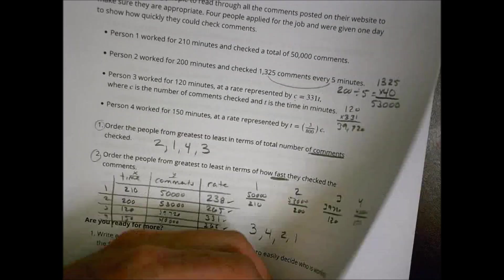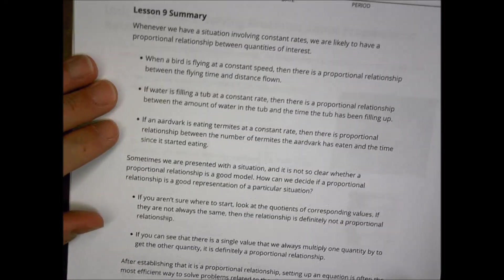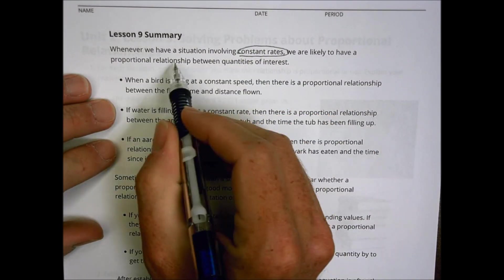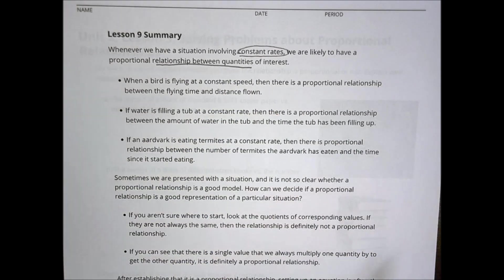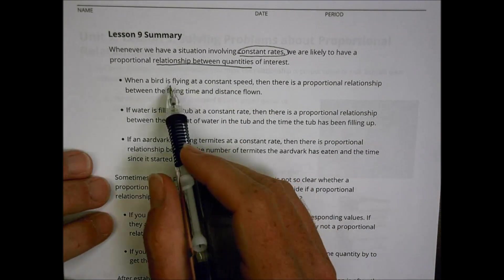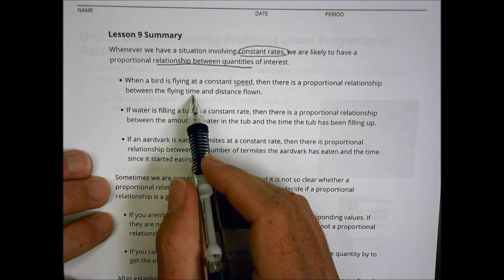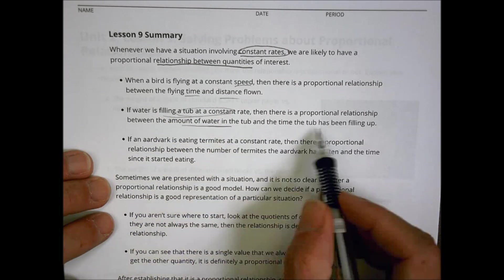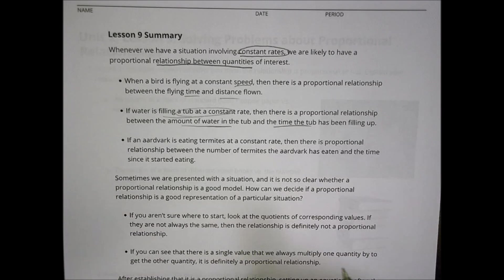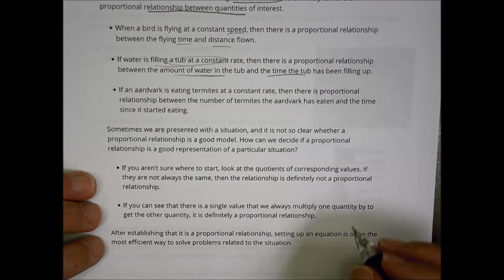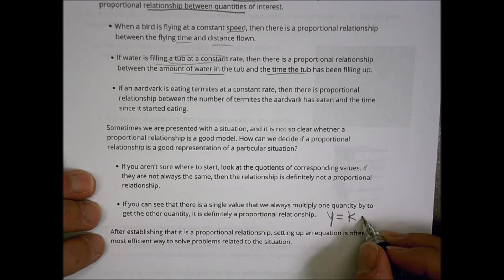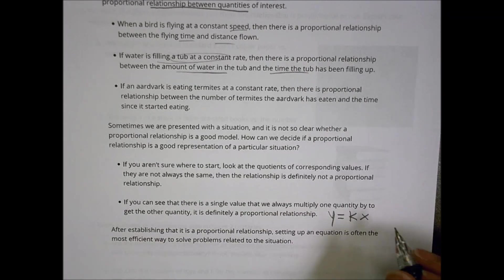Looking at the summary for today's lesson, we're really talking about things that have a constant rate. Constant rates are how we decide if there's going to be a proportional relationship between different quantities — they have to have a constant rate connecting those two things together. Whether it's a bird flying at a constant speed looking at the relationship between time and distance, or filling a bathtub looking at the relationship between the amount of water and time, there should be a relationship you can write in the form Y equals a constant of proportionality times X.